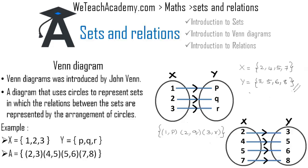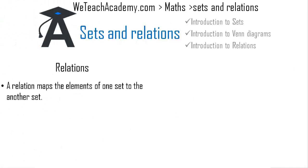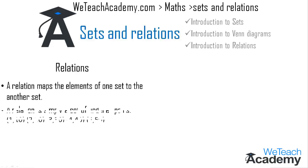Now let us learn what relations are. A relation maps the elements of one set to another set. In other words, a relation is simply a set of ordered pairs, where an ordered pair is a pair of elements placed in a particular order. For example, some ordered pairs are: (1,10), (2,20), (3,30), (4,40), and (5,50).